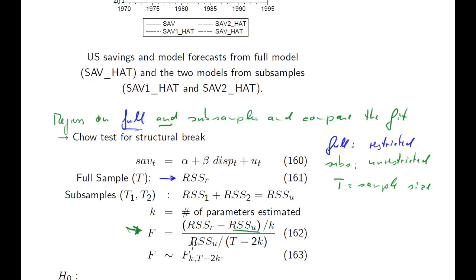But how do we get it for the unrestricted? How do we get RSS_U? Now, the unrestricted is estimating in the two subsamples. And we get a residual sum of squares from the first subsample and a residual sum of squares from the second subsample. And what we'll do is we'll just add these two, because they don't have overlapping observations. These two subsamples cover all the observations that are also covered in the full sample. So we just add the two residual sum of squares, and what we get is the residual sum of squares unrestricted.